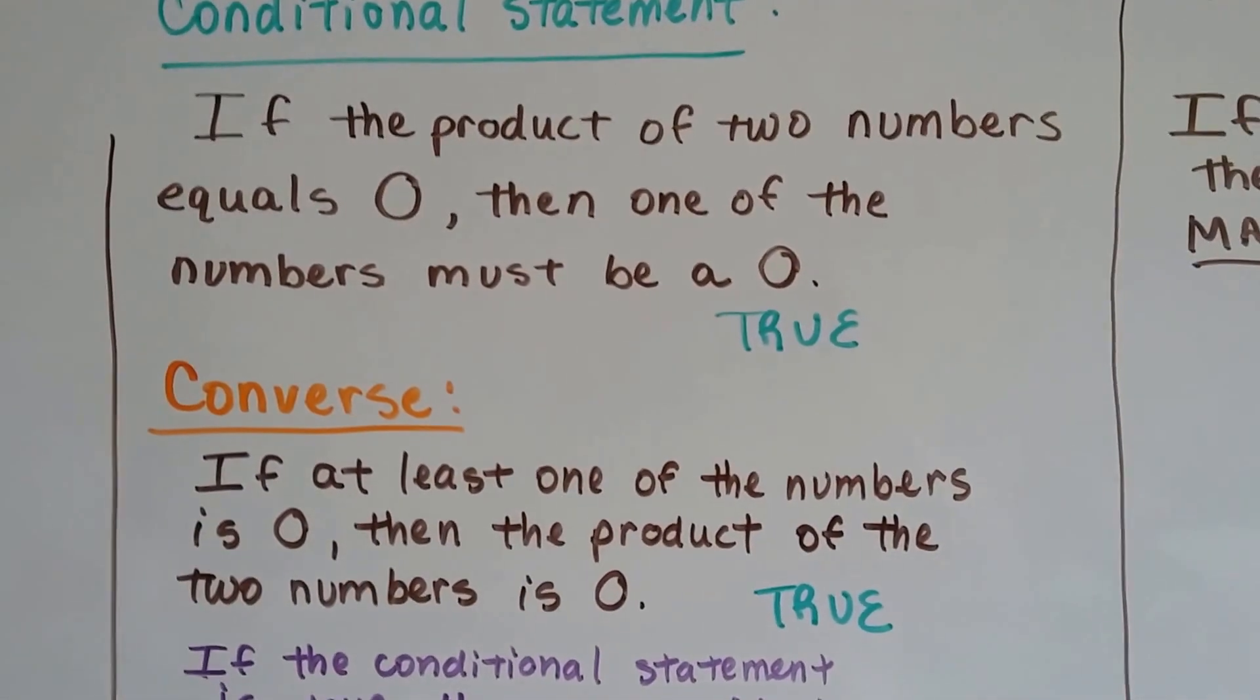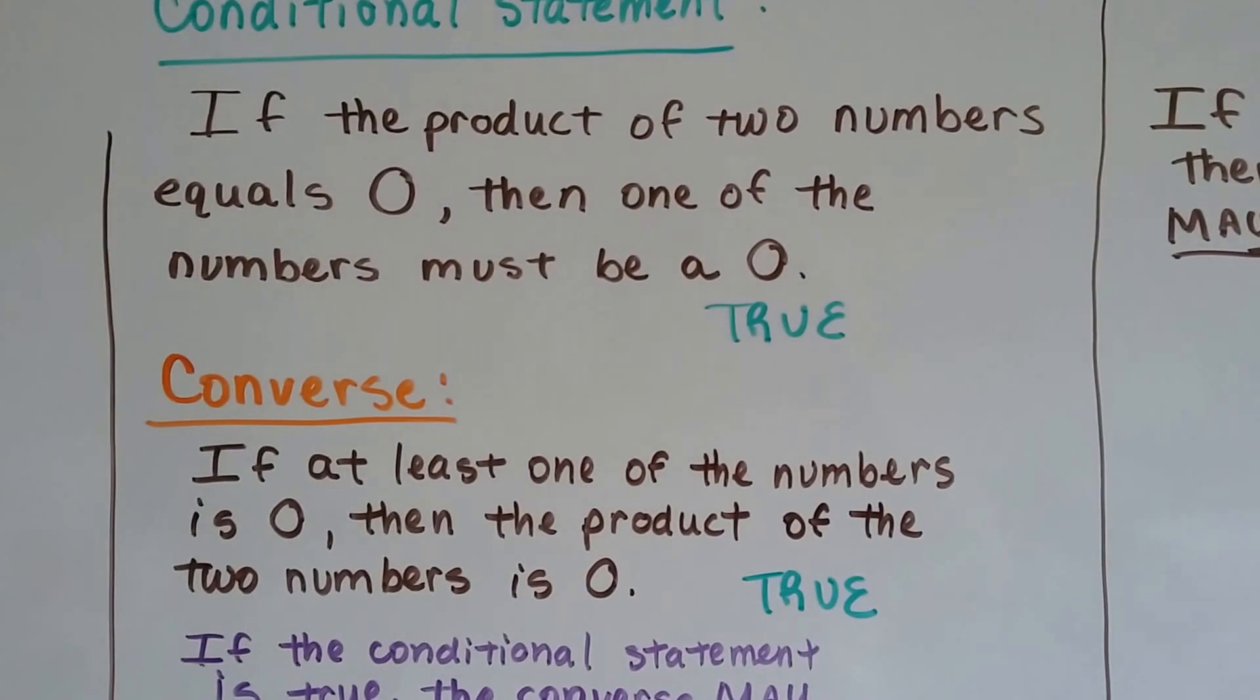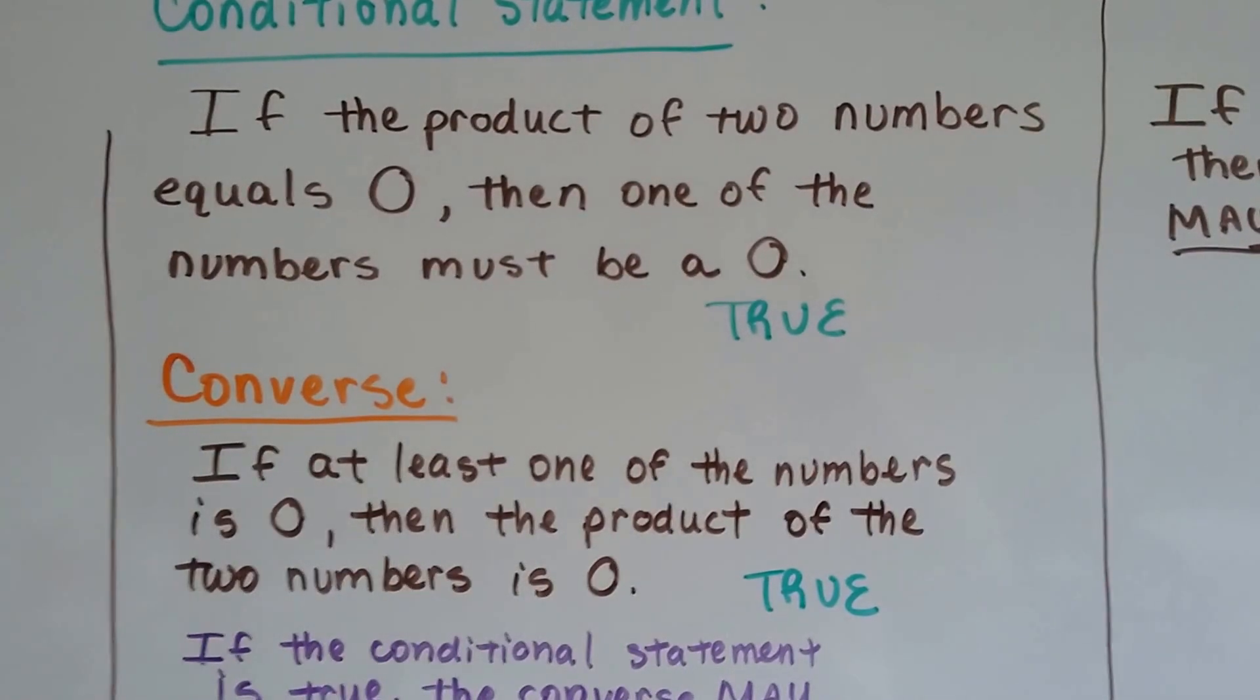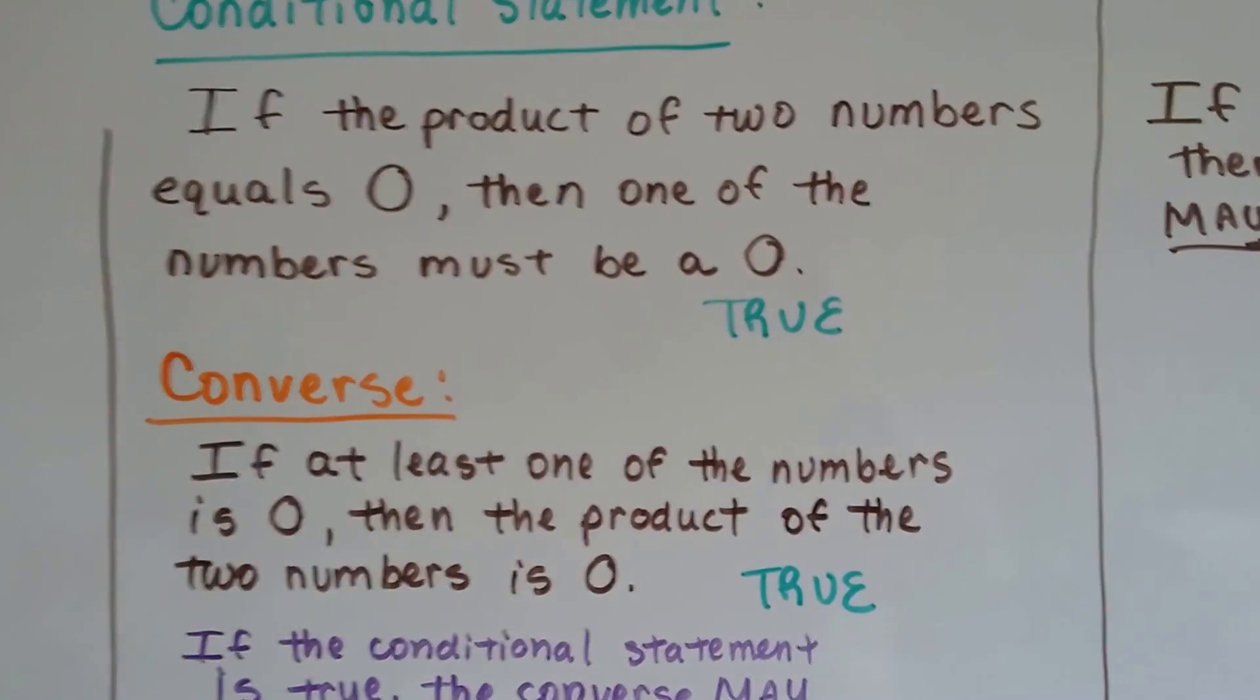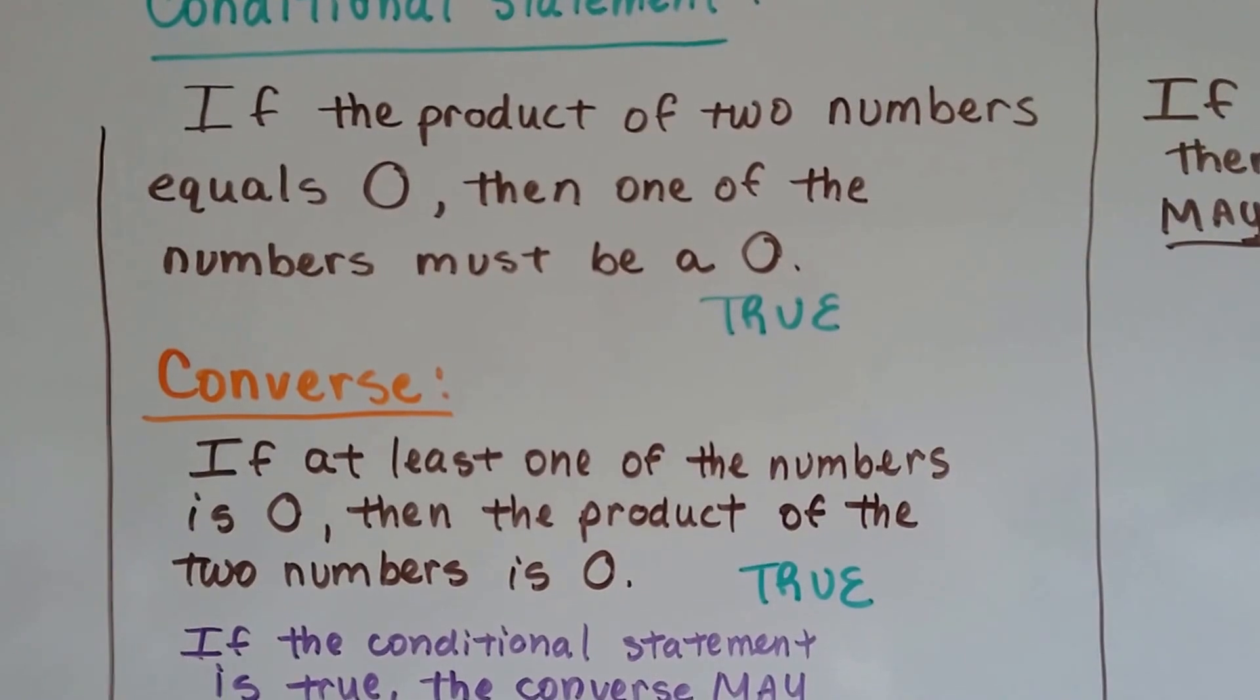The converse would be: if at least one of the numbers is zero, then the product of two numbers is zero. That's true also. So that conditional statement and its converse are both true.